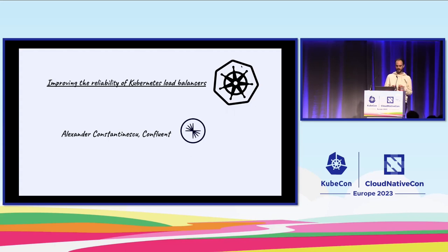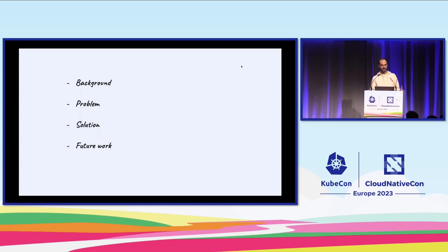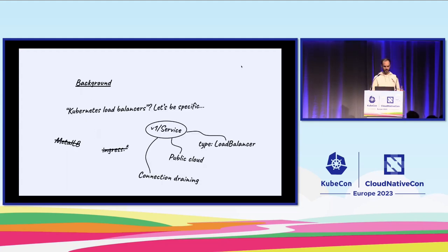I'm going to begin by presenting a bit of background that exists within this problem space, then the problem itself, the solution that we've been working on, and some future work that we have on the whiteboard. To begin with Kubernetes load balancers, it's good to be a bit more specific because the term load balancer in an ecosystem such as Kubernetes can mean a lot of different things.